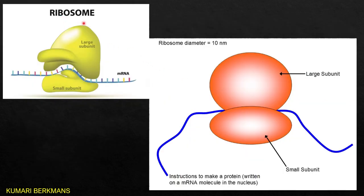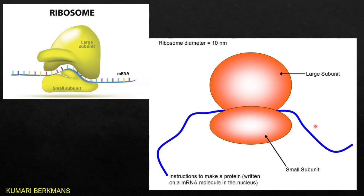Another organelle is the ribosome. You can see the structure — it has a large subunit and a small subunit. The chain-like structure you see is mRNA, which stands for messenger RNA (ribonucleic acid). The mRNA is synthesized inside the nucleus and comes out to sit between the large and small subunits. Here, protein synthesis takes place — the tRNA reads the mRNA and synthesizes the protein. This protein chain is synthesized between the large and small subunits. These ribosomes attach to the wall of the endoplasmic reticulum, giving it the rough endoplasmic reticulum appearance.